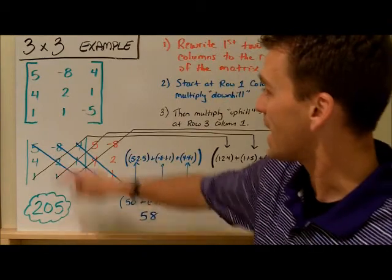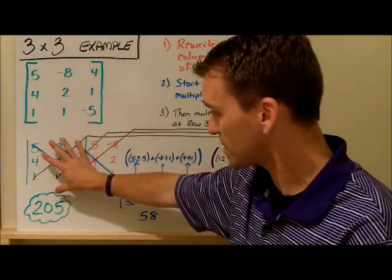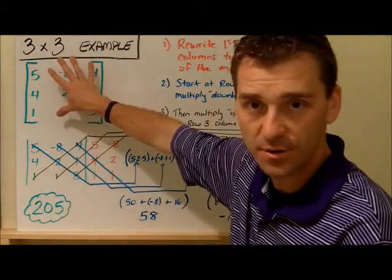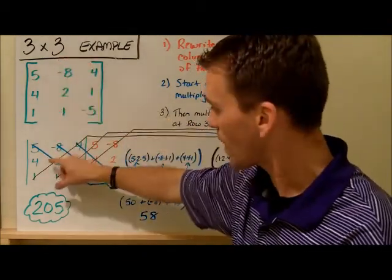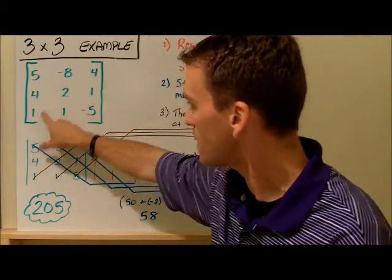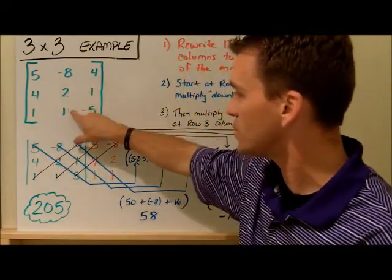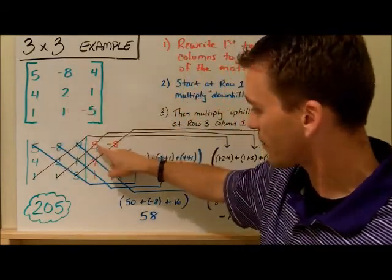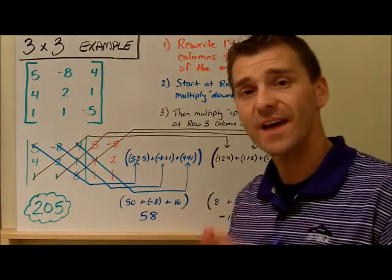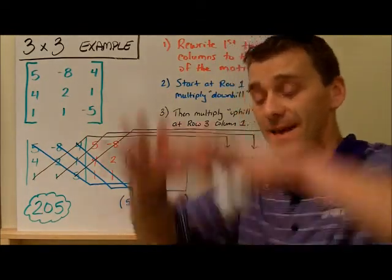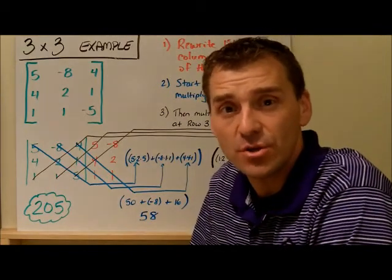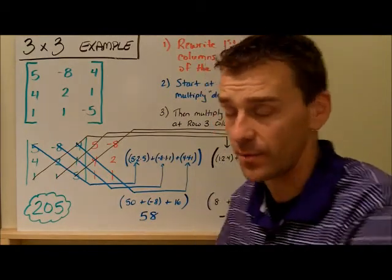This is just really setting the stage for what you're going to do before we multiply and do any of this. So as you see here, I transposed the example down. I took the first two columns — the five, four, one and negative eight, two, one — and I wrote those over here to the right. Once I do that, that sets the stage for what I'm actually going to do when I find this determinant.